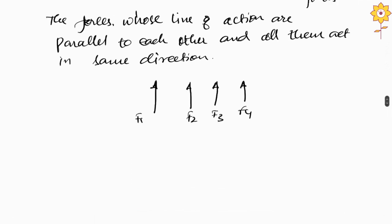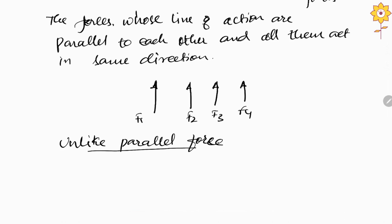On the other hand, we have unlike parallel force system. In unlike parallel force system, the direction would not be the same — it will be in different directions. The line of action will be parallel to each other, but some forces will be acting downwards and some acting upward. Here F1, F2, F3, and F4 — if you see the line of action, they are parallel to each other, but the directions are different. So these are called as unlike parallel forces.